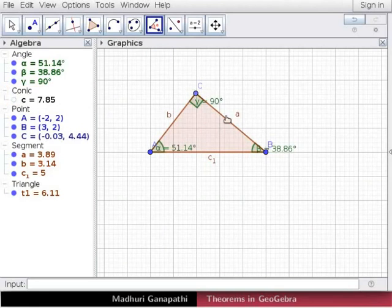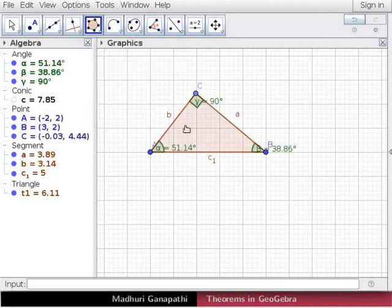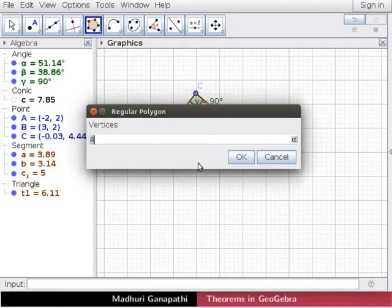We will draw three squares using the sides of the triangle. For that, click on the regular polygon tool and then click on the points CB. The regular polygon text box opens with the default value 4. Click on OK button at the bottom.